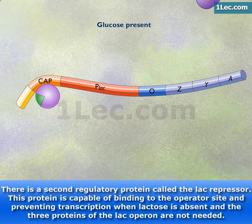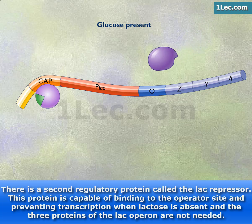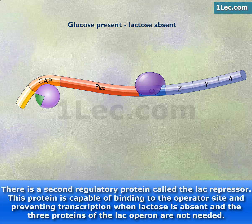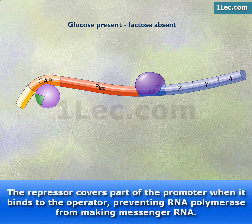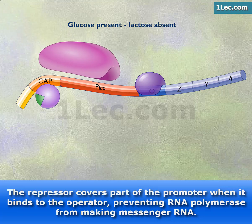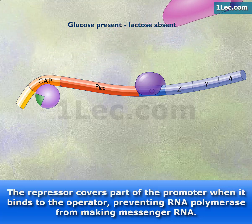There is a second regulatory protein called the LAC repressor. This protein is capable of binding to the operator site and preventing transcription when lactose is absent and the three proteins of the LAC operon are not needed. The repressor covers part of the promoter when it binds to the operator, preventing RNA polymerase from making messenger RNA.